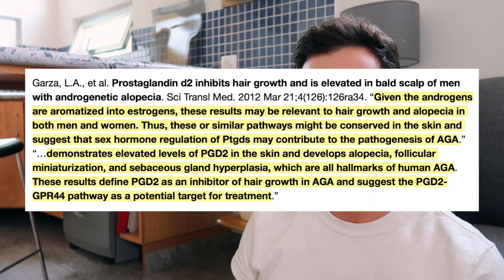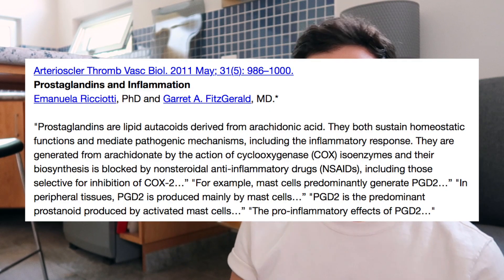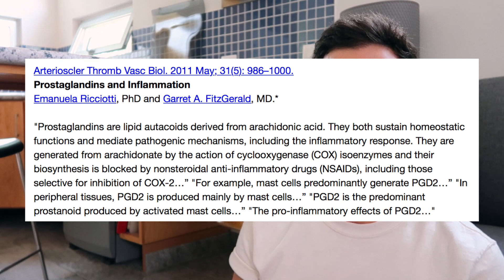Prostaglandin D2, which we talked about a few weeks ago — mast cells are producers of prostaglandin D2; in peripheral tissues it is produced mainly by mast cells. Tying all the ideas together: reduction in systemic energy, reduced peripheral blood flow and delivery of glucose, oxygen, and nutrients, hypoxia, accumulation and activation of mast cells, and then the mast cells — depending on the person's composition of fatty acids — producing inflammatory prostaglandins.